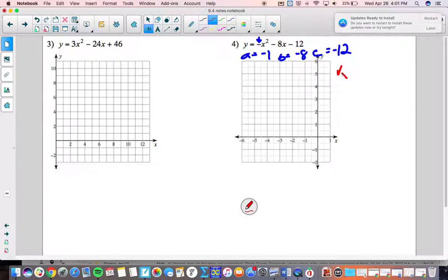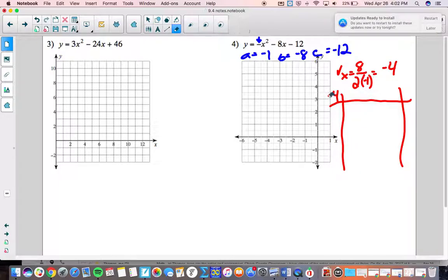Let's get our vertex x value so that's going to be the opposite of B which is positive 8 now because B is negative 8, so the opposite of that is positive, and then 2 times negative 1. So we get negative 4 when we simplify that. So now we make our table and negative 4 will go in the middle of our x column.